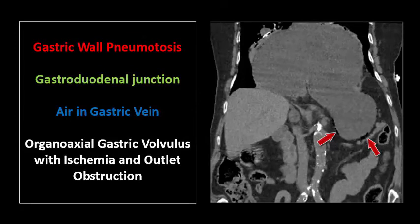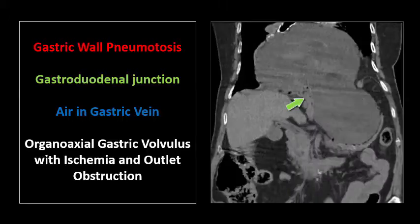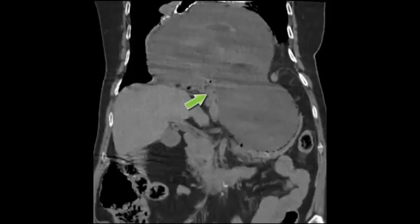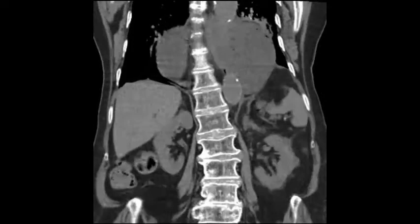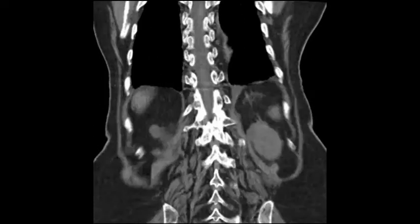The coronal images show the extent of gastric dilatation and gastric wall pneumatosis. Also note again how the gastroduodenal junction is herniating, causing the gastric outlet obstruction. Here is the coronal cineclip. You more easily see the reversed or upside-down orientation of the stomach with the greater curvature above the lesser curvature, which is typically how organoaxial gastric volvulus is described.